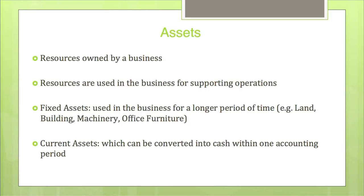A fixed asset will not be sold for a long period of time — it will be used in the business. At the end of the business or when the machine is no longer able to give the required output, then it will be sold out. It will be used for a very long period, maybe 15 years, maybe 20 years. Examples of fixed assets are land, building, machinery, office furniture, etc. — all used for a very long period of time.